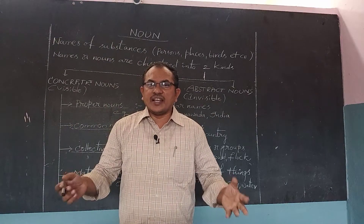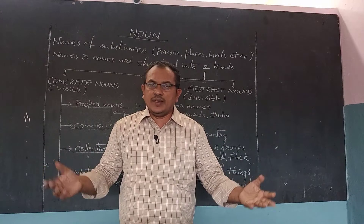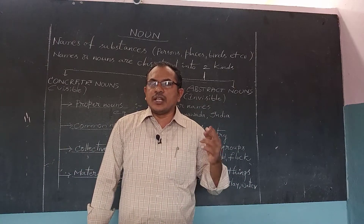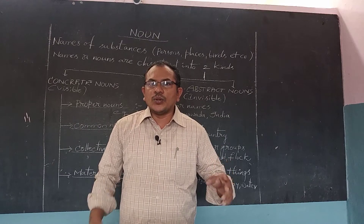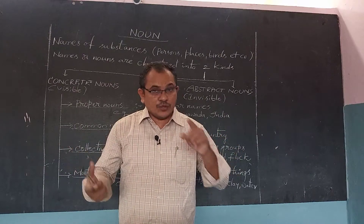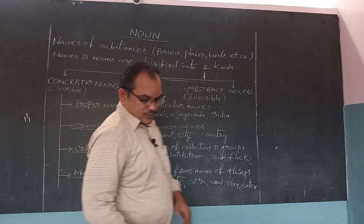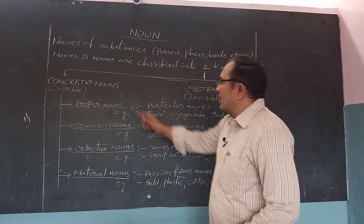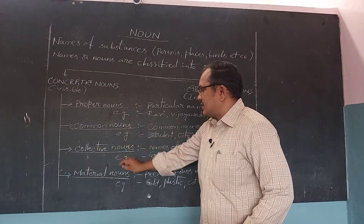We can see a number of things daily — those are visible substances. But invisible names of substances also exist — we can discuss that later. First of all, we are going to explain the concrete nouns. Concrete nouns are classified again into four kinds. Be careful in remembering this.